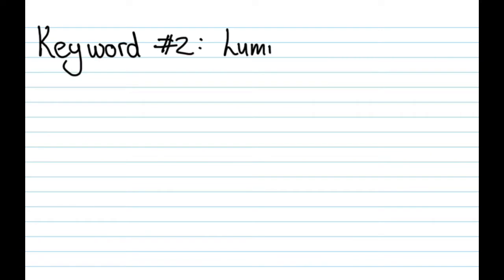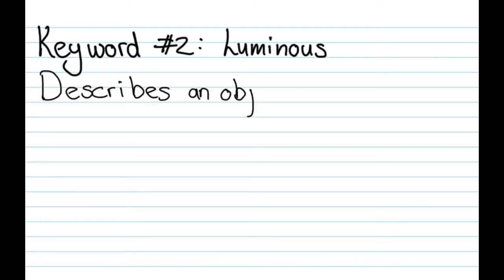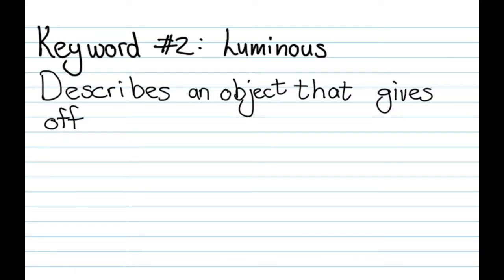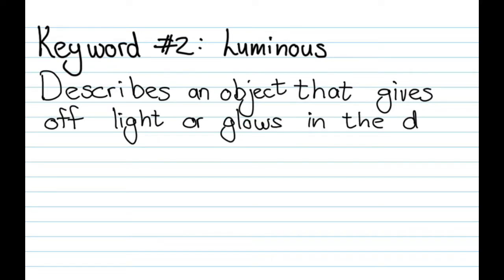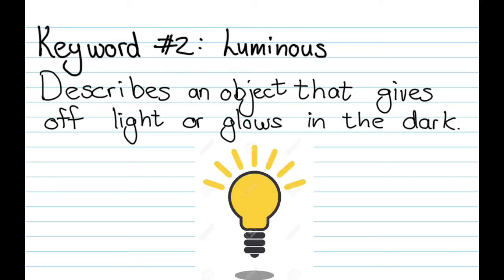Our second keyword is the word luminous. Luminous describes an object that gives off light or glows in the dark. An example here would be something like a light bulb that gives off light.